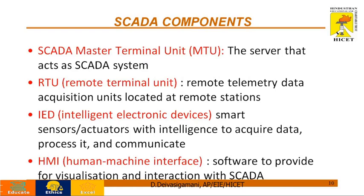These are the SCADA components. First, MTU — SCADA Master Terminal Unit — is the main server where all systems are connected. It takes major decisions and handles all communication aspects. Next, RTU — the remote terminal unit, also called the telemetry unit — is a microprocessor-based system that indirectly connects remote stations and is directly connected to all sensors and transducers. Next, IED — Intelligent Electronic Device — is a smart instrument mainly implemented to acquire data from devices like circuit breakers, transformers, and all power sector units. Finally, HMI is the human machine interface — a software interface where all interaction and visualization takes place.